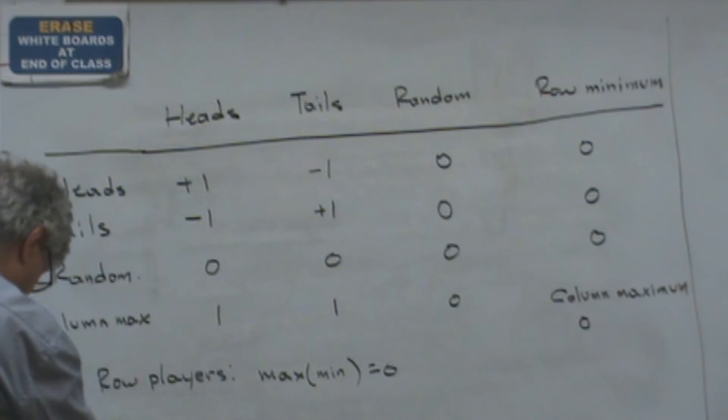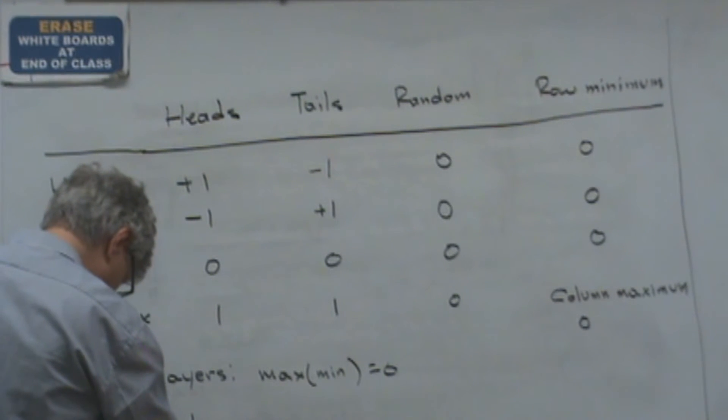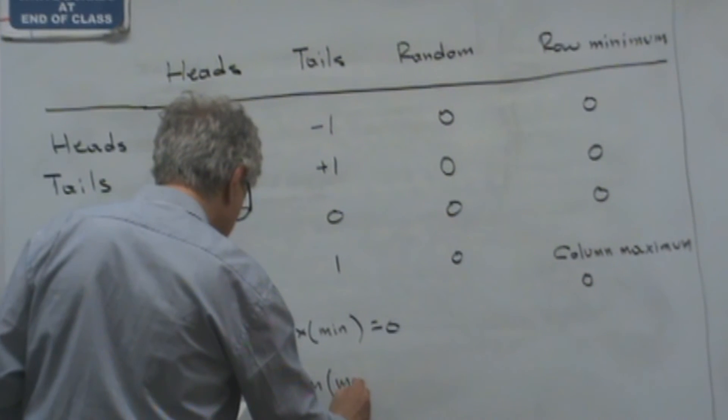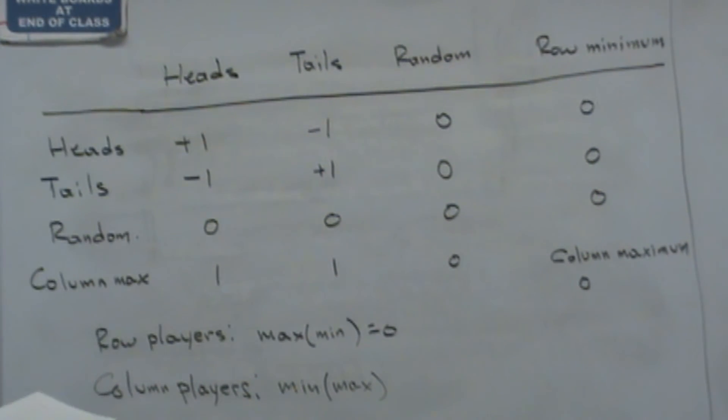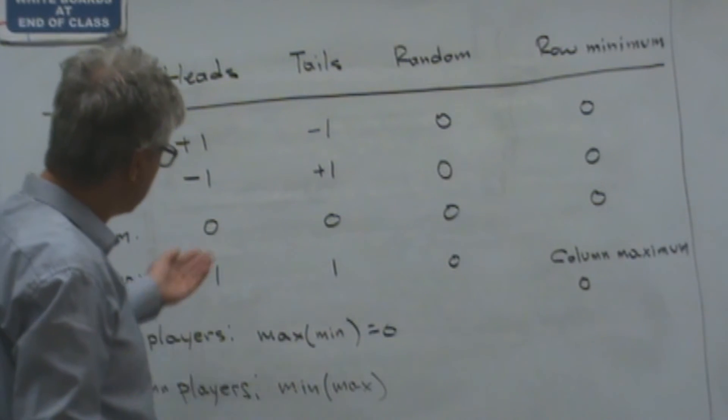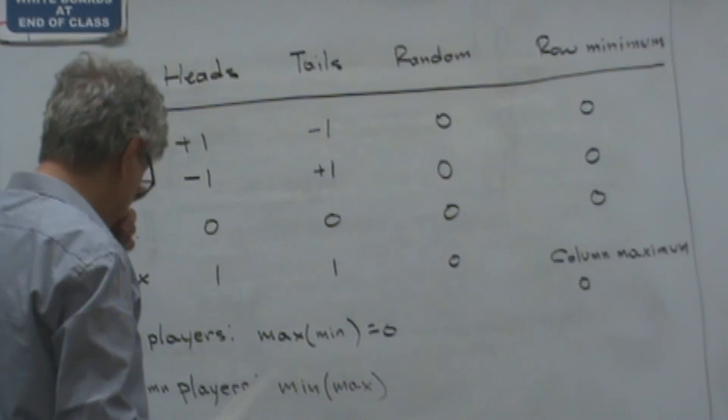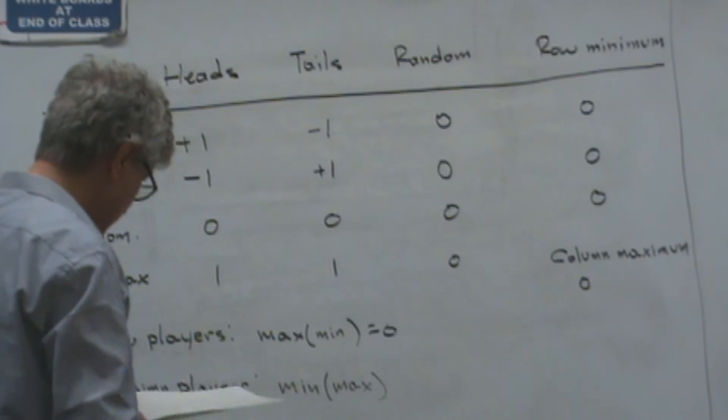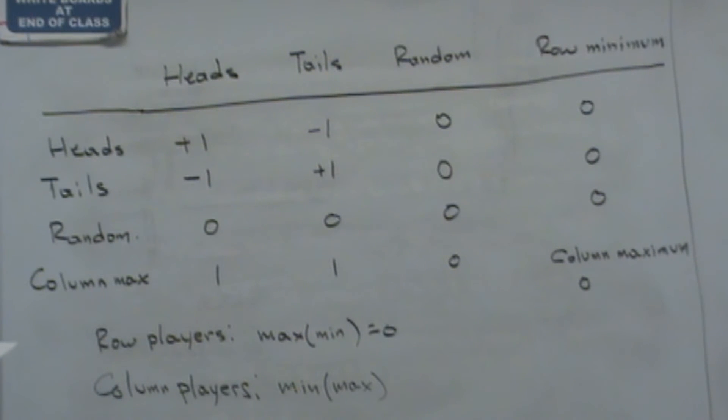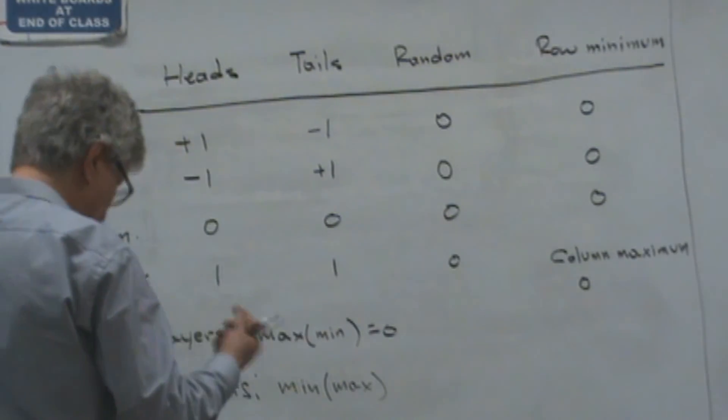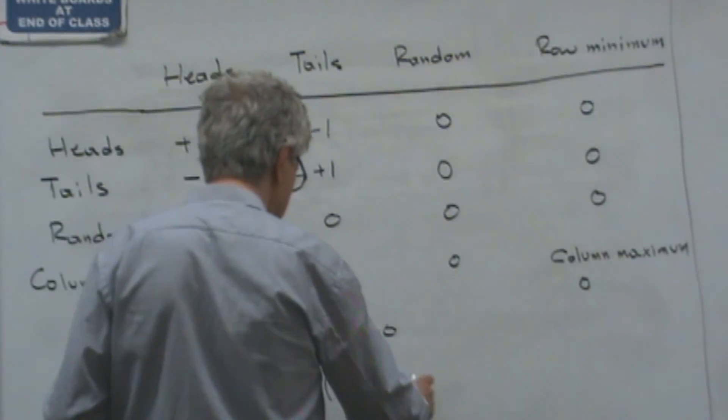And similarly for the column player, we look at the min max. So we find the maxima of the columns and then the minimum. If we look at the maxima, they are one, one, zero. And the minimum of the maxima is zero.